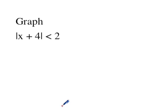First, what we need to do is create two different inequalities to express the absolute value. One of them is going to just be x plus 4 is less than 2. The other, because of the absolute value here, is going to be x plus 4...